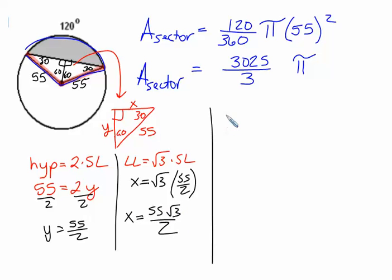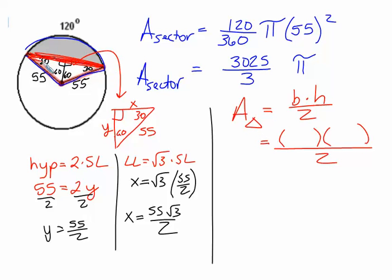Now we turn back to finding the area of the full triangle. So the area of a triangle is a base times a height divided by 2. Be careful. In this triangle, the entire base right here that I have shaded in red is 2x's. Well, 2x's would be 55, radical 3. So for the base we're going to say 55, radical 3. The height is the short leg, which is y. That's 55 over 2.